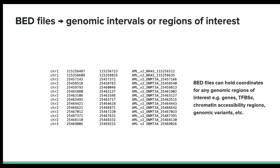BED files are simple tab-delimited text files used to represent genomic intervals or regions of interest. They can be used to store various kinds of genomic annotations, such as gene coordinates, transcription factor binding sites, regions of chromatin accessibility, genomic variants, or pretty much anything else you might be interested in. Each row in a BED file represents a genomic interval and comprises at least three compulsory fields: the chromosome, the start position, and the end position, plus any additional optional information.